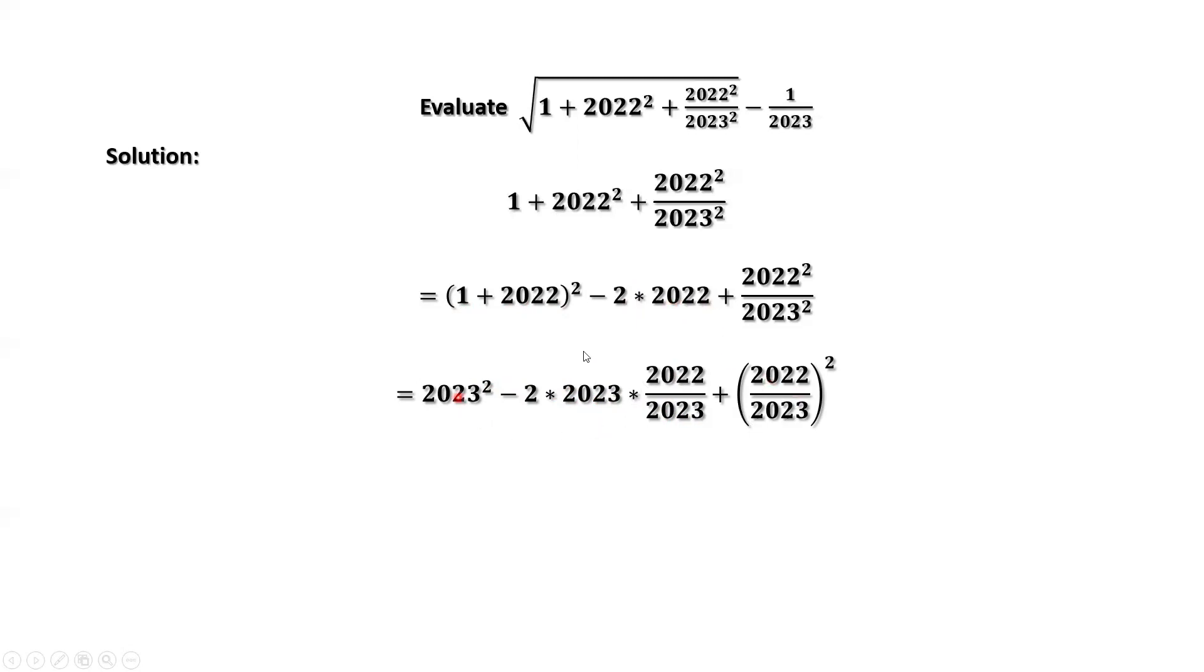Look at this structure. A square plus B square minus 2AB. We can make it A square. This is 2023 minus 2022 over 2023, then square.